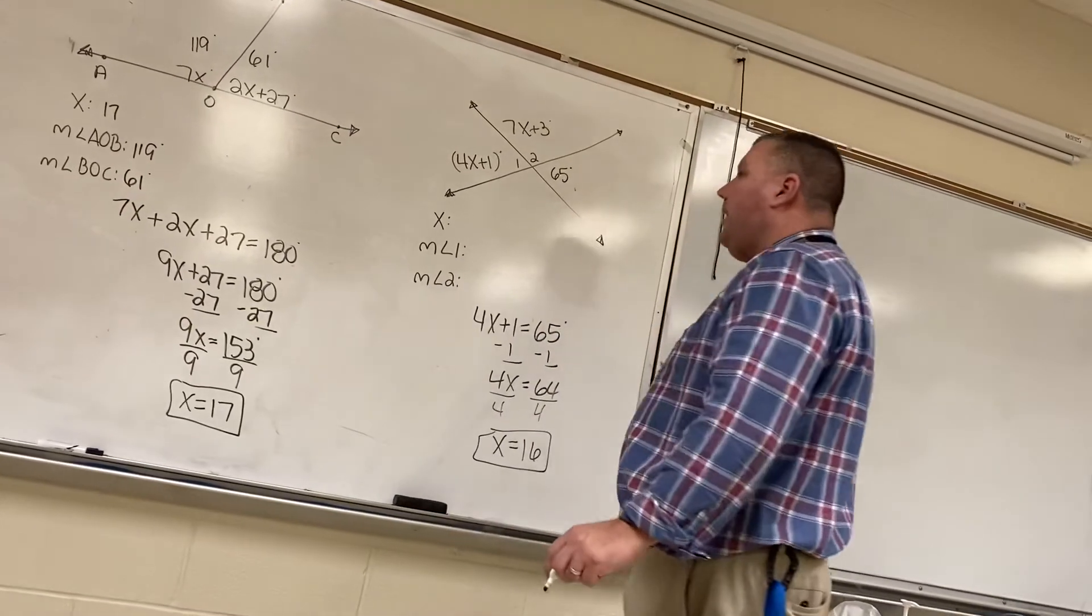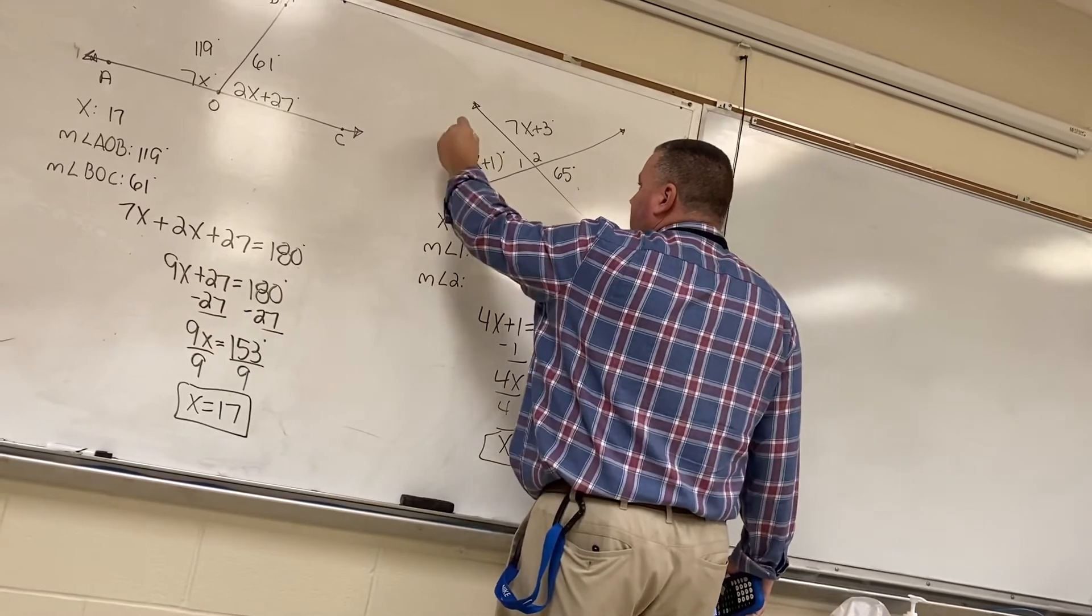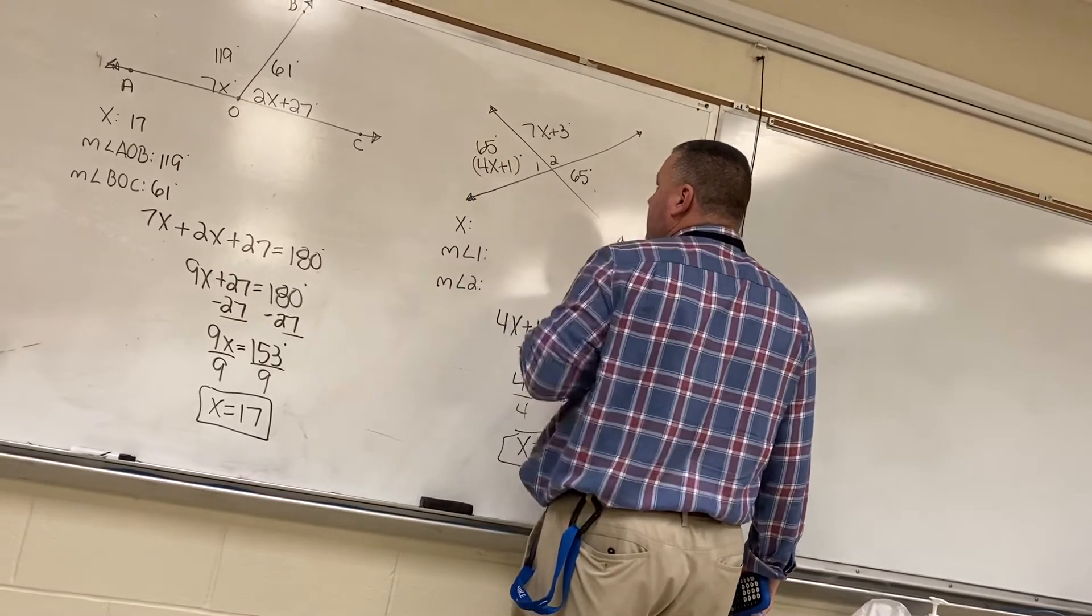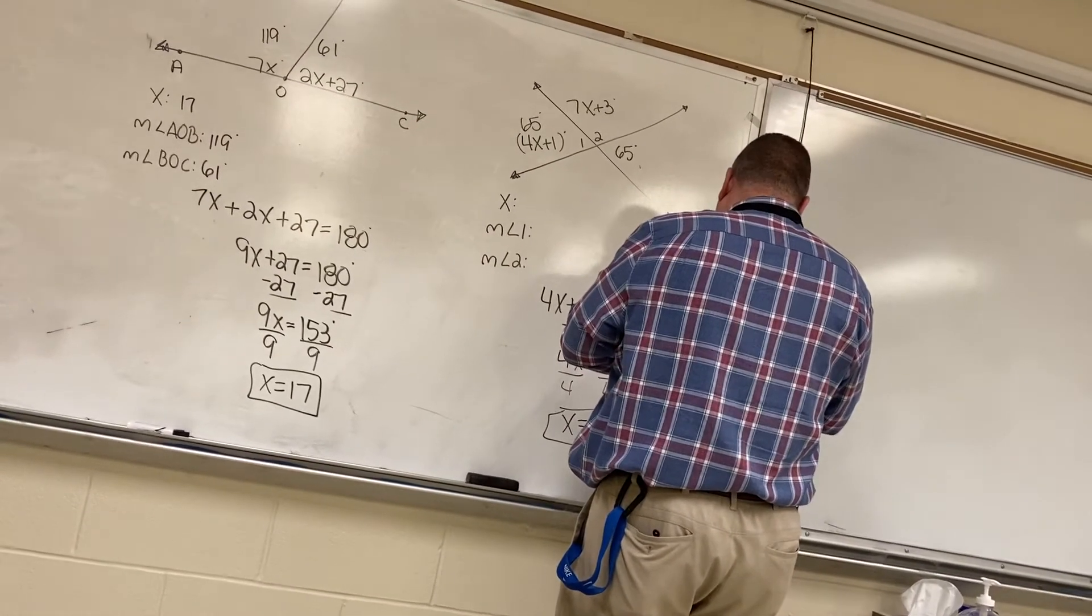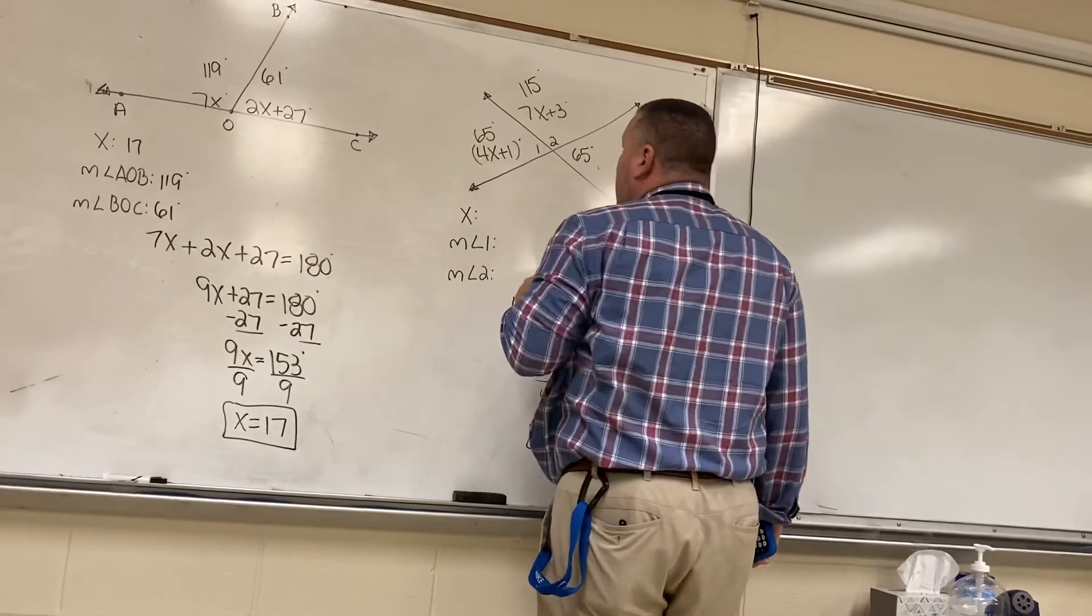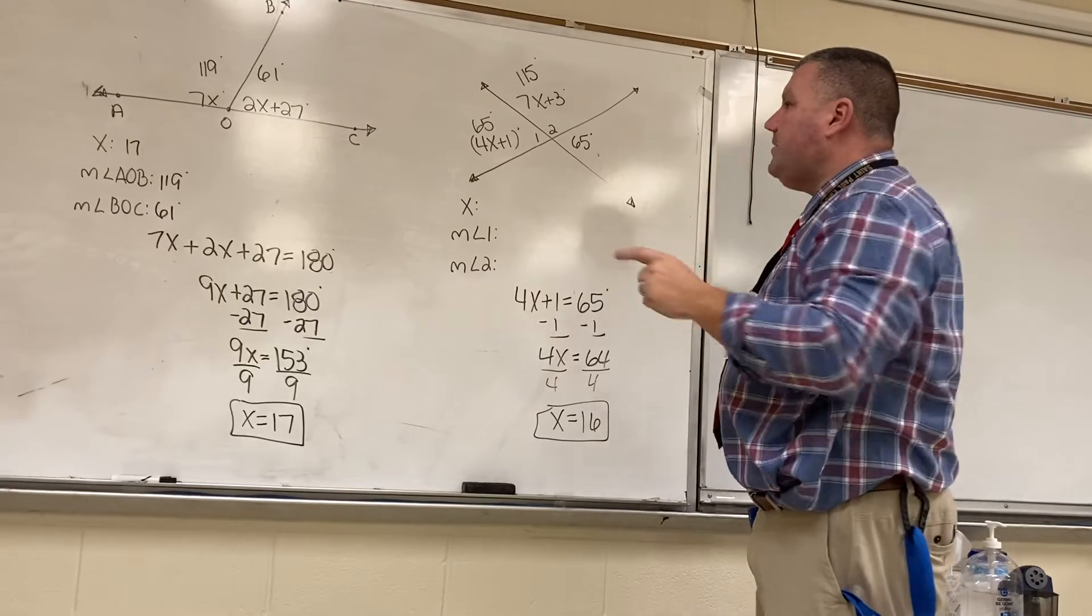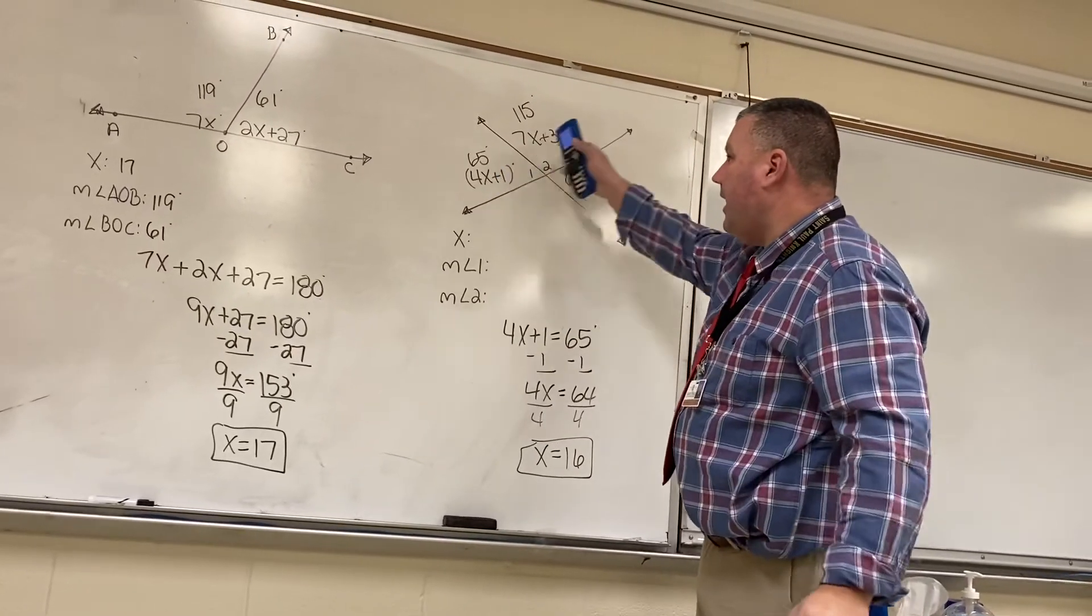Let's go through and plug it in to make sure. 4 times 16 is 64 plus 1 is 65 degrees. So, then we're going to do 7 times 16 plus 3 is equal to 115 degrees. So, 65 plus 115 is equal to 180 degrees. So, that proves that this is a straight line.